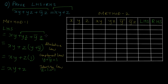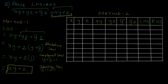Notice that in each step we required a boolean algebraic law, so these basic laws are very important in order to simplify boolean algebraic expressions. This answer we reached for LHS is exactly the same as the RHS. Hence, by Method 1, we have proved that LHS is equal to RHS.